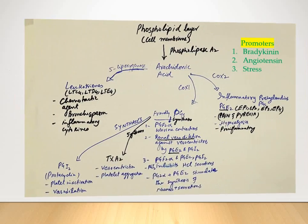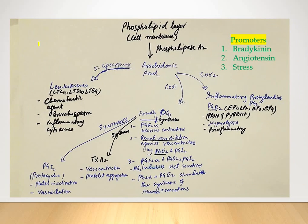Now the pathway: the phospholipid layer is present in each cell membrane and it is converted into arachidonic acid through phospholipase A2. The phospholipase A2 enzyme helps in the synthesis of arachidonic acid, and then it is converted through cyclooxygenase into the respective prostaglandins.